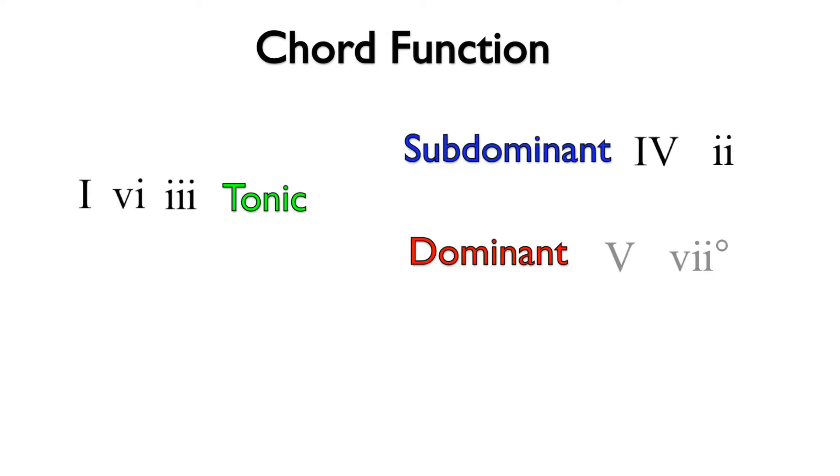In the second video in this series we focused on chord function. By recognizing if a chord is tonic, subdominant, or dominant function, we can create progressions that do or do not have a sense of forward motion. In other words, a sense of progression.